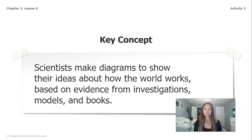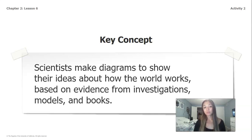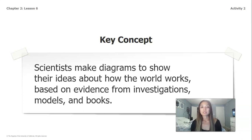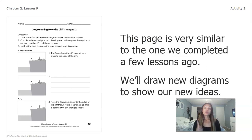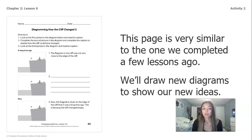We've been doing all of these things throughout this chapter. We've looked at a bunch of different models of cliffs and diagrams, and we have also read the book 'What's Stronger' to help us get more ideas for how we can answer the question about how the cliff changed. This page is very similar to the one we completed a few lessons ago, and we're going to draw a new diagram to show our new ideas.